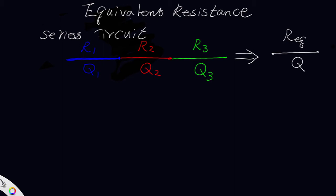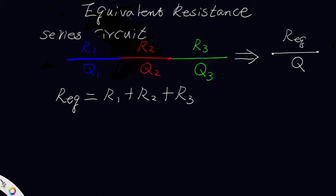How do we calculate the equivalent resistance and the quantity flowing in this equivalent airway? The equivalent resistance equals the sum of the resistance of each of the airways in series. The quantity Q equals the individual Q's, and Q1 must equal Q2, which must equal Q3. This is the relationship for a series circuit.